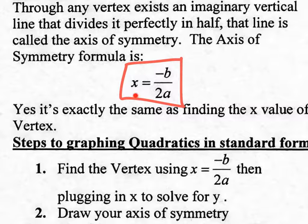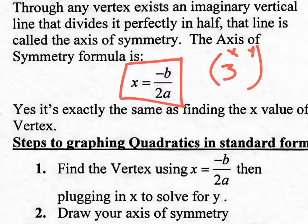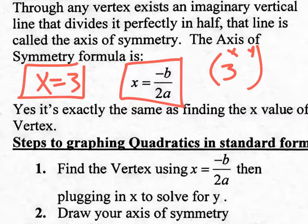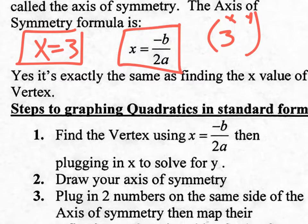Let's say you use the vertex formula and get X equals 3. You plug 3 into the equation to find Y. If they ask you for the equation of the axis of symmetry, you simply say X equals 3. That's your equation for the axis of symmetry.